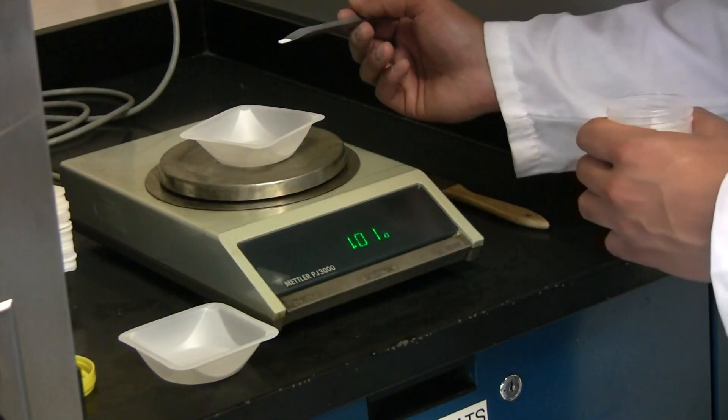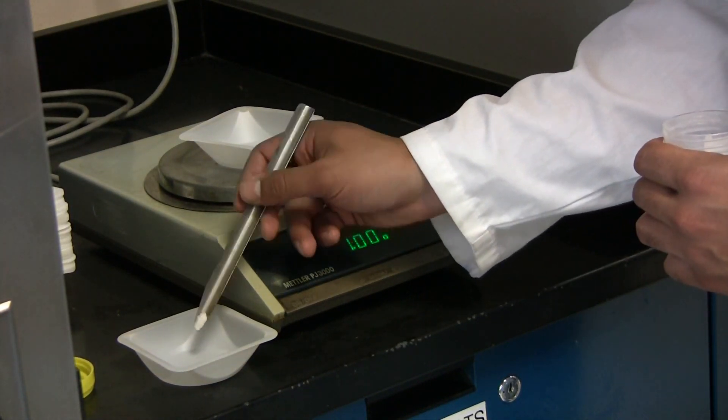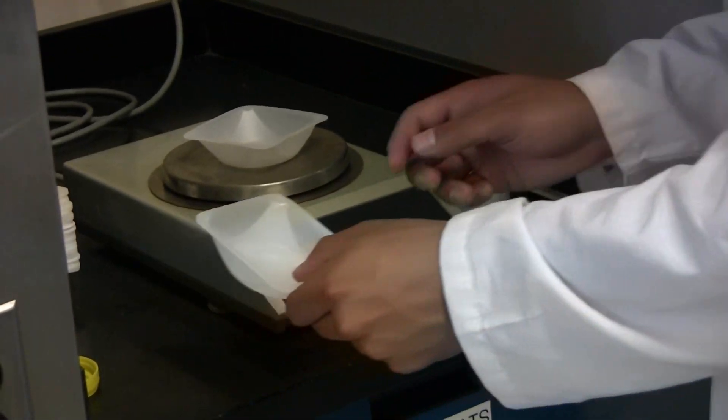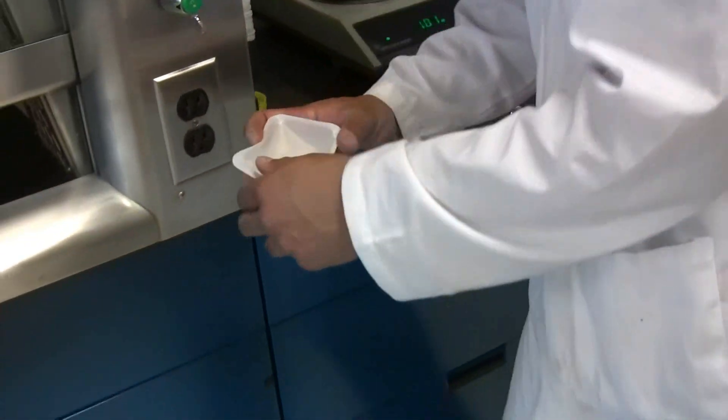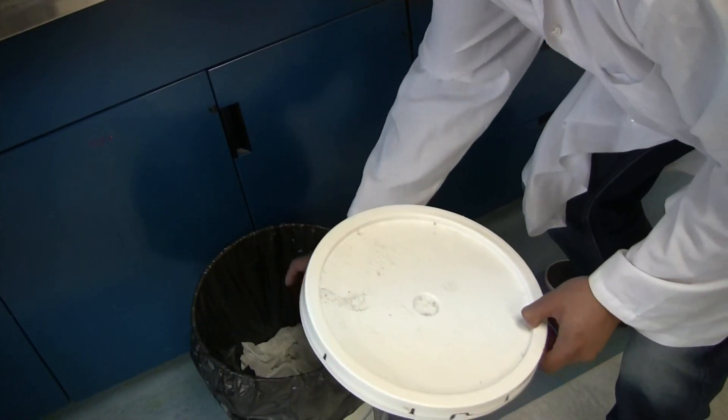If you have any extra sample, do not place this back into the container you got your sample from. Instead, place this directly into a separate weigh boat and place this into the contaminated waste bin. You don't want to cross contaminate your sample.